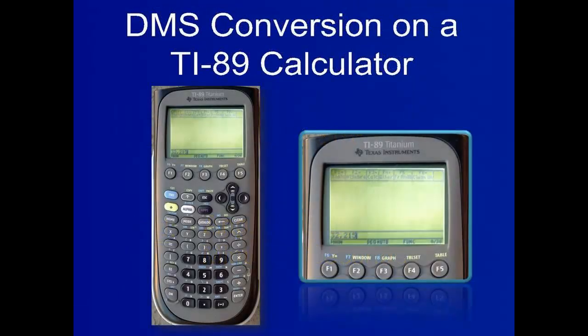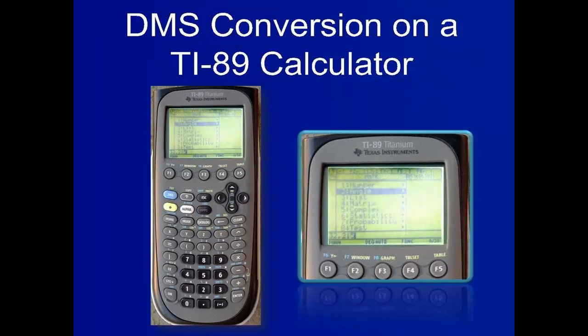To get from decimal degrees to DMS format on a TI-89 calculator, first type in the angle — in this case 32.215 degrees is used. Next, click second, then math, then scroll down to the second option labeled angle. Press enter.